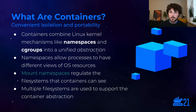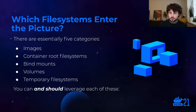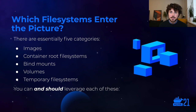That's exactly what's done in order to support the different abstractions used with containers. There are five categories of storage we're going to look at: images, container root file systems, bind mounts, volumes, and temporary file systems. You really should try to understand and leverage all of these file systems as appropriate.